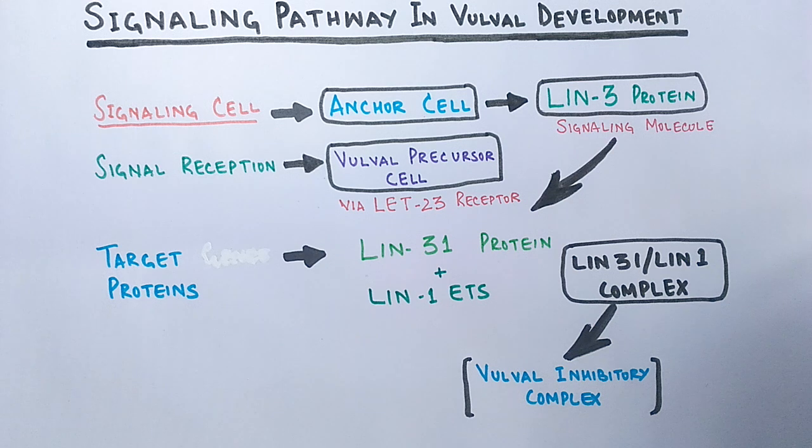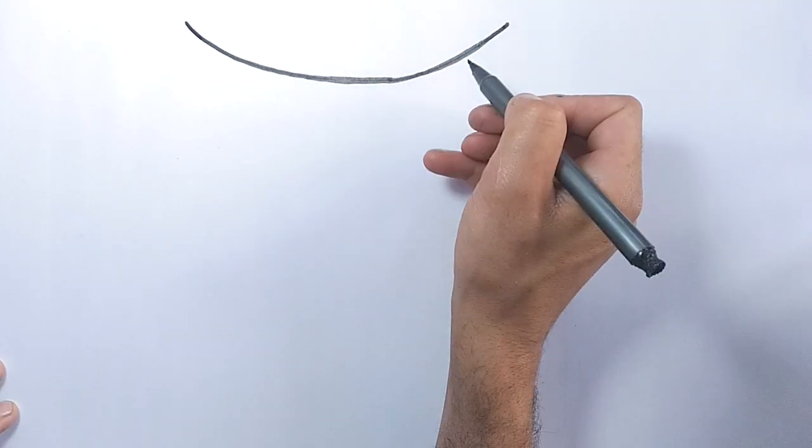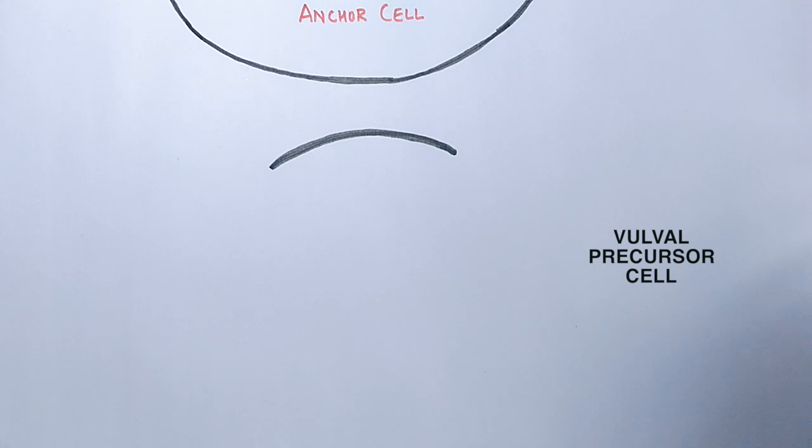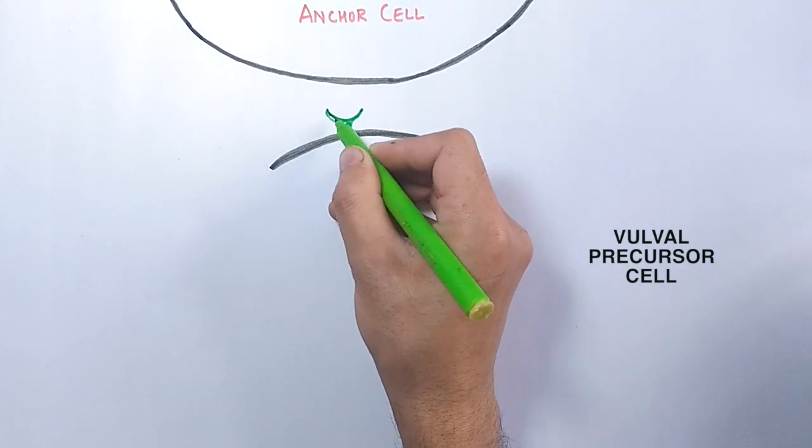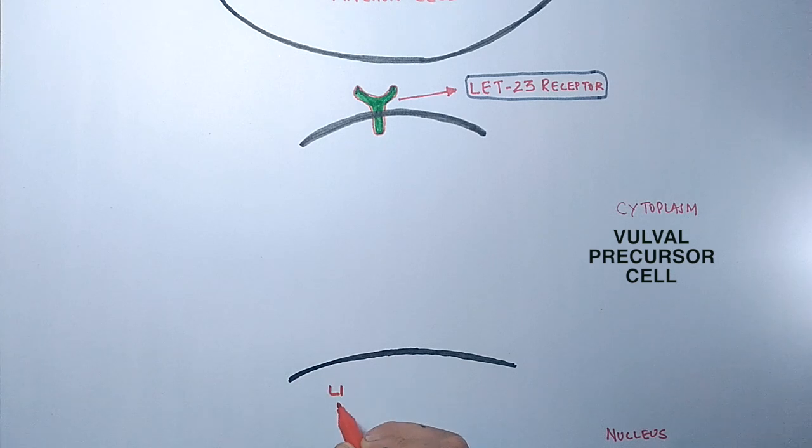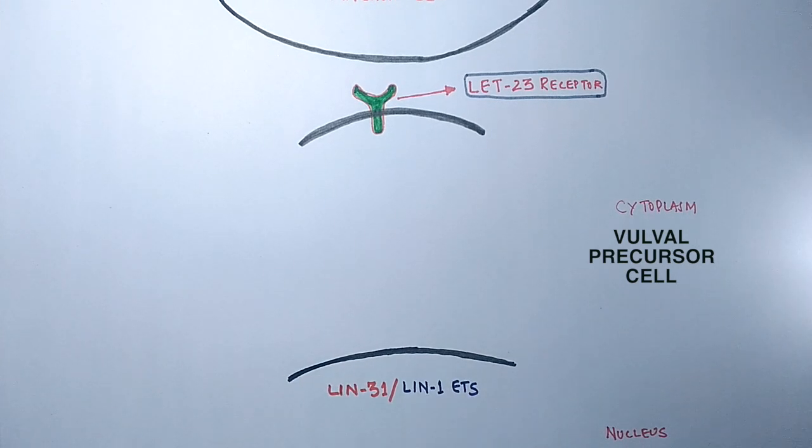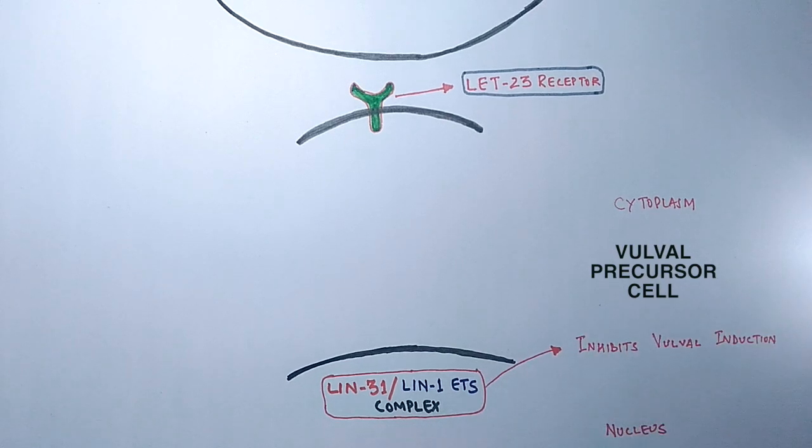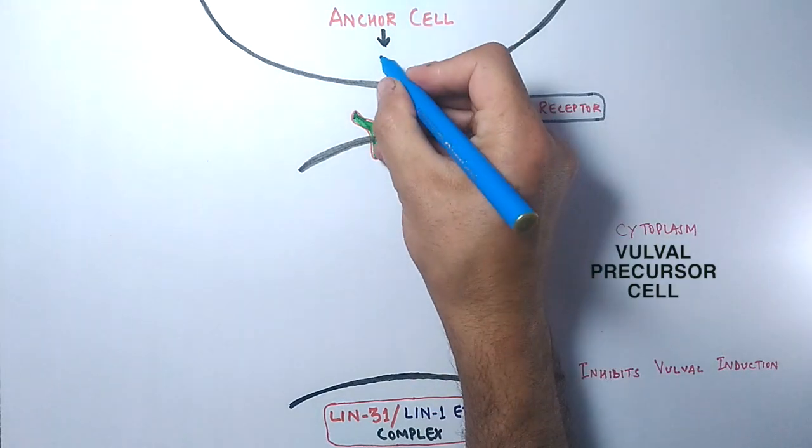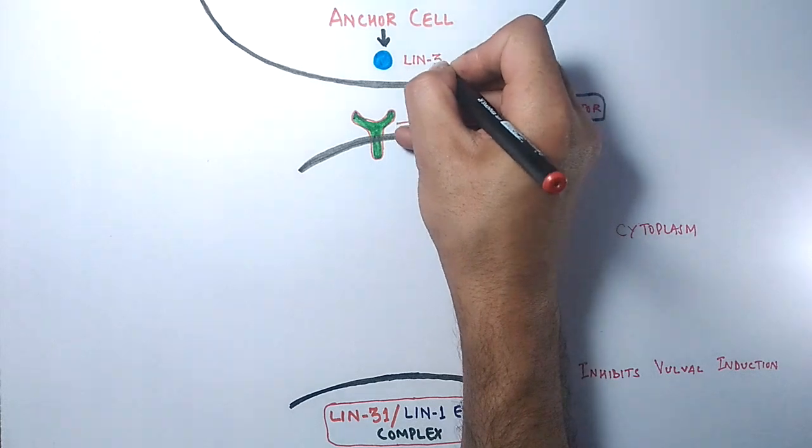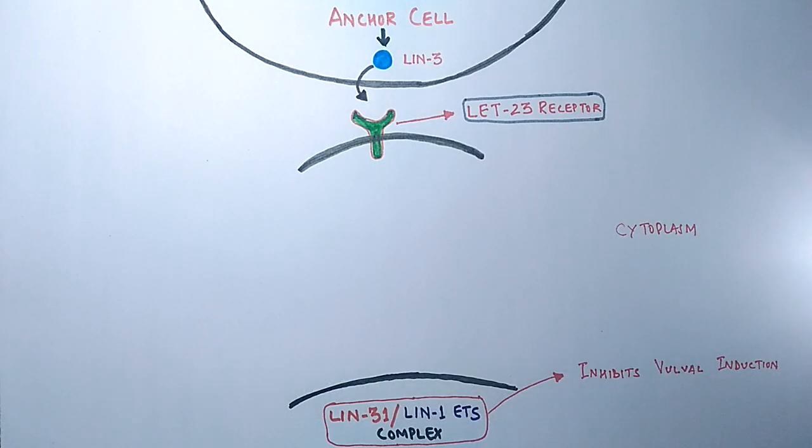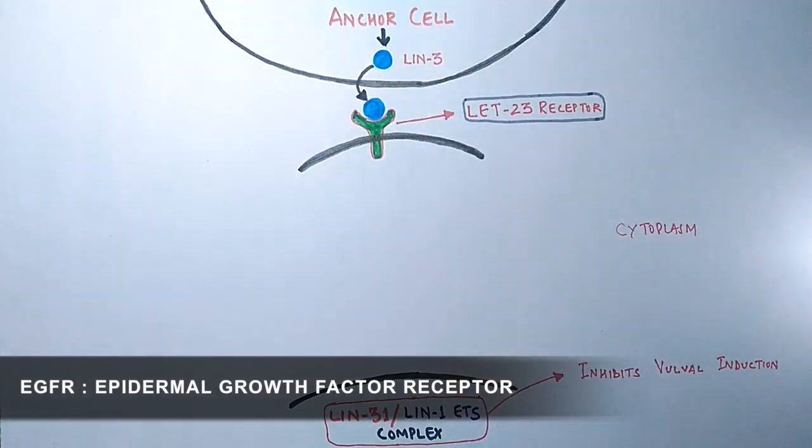Now let's discuss the signaling pathway in detail. The signal generating cell is the anchor cell, and the signal receiving cell is the vulval precursor cell. The signaling molecule is received by the let-23 receptor of the vulval precursor cell, as shown in the figure. At the targeting site, there's a lin-31 lin-1 complex in the nucleus of VPC which inhibits vulval development. The anchor cell secretes lin-3 protein, which is analogous to EGF of mammals. Then this lin-3 molecule is received by the let-23 receptor of VPC, as you can see in the diagram.